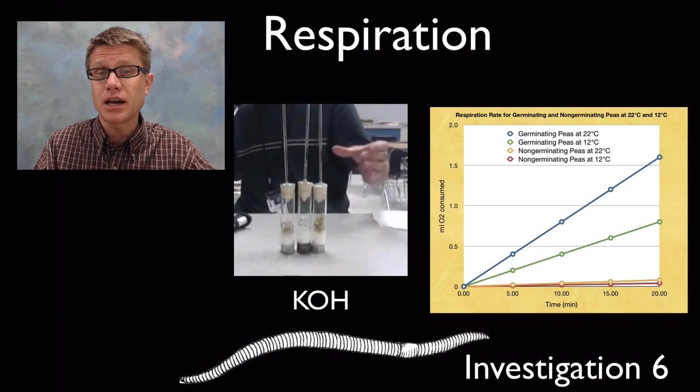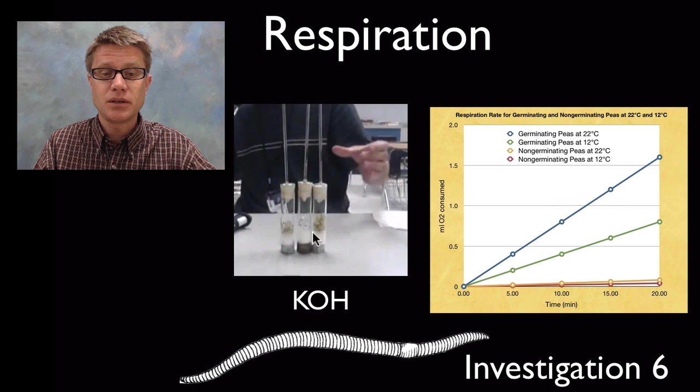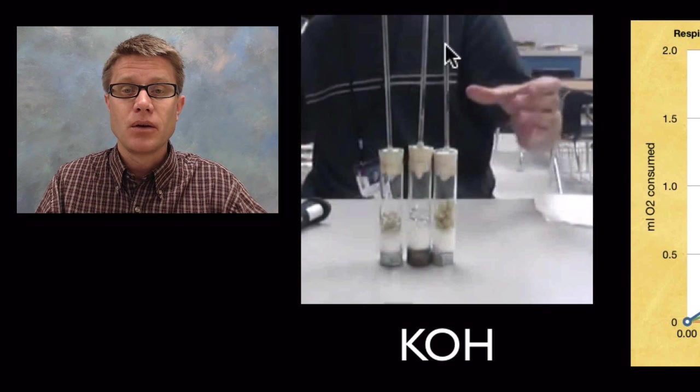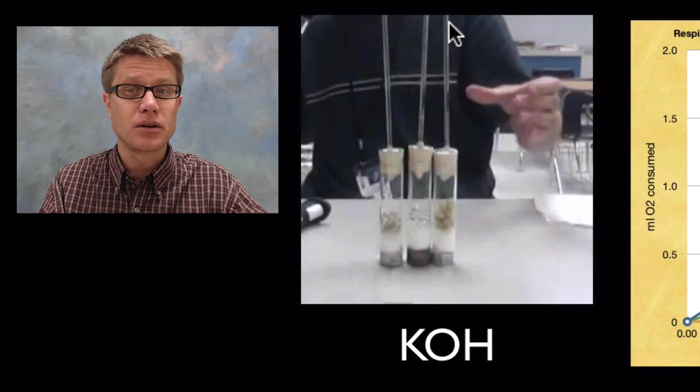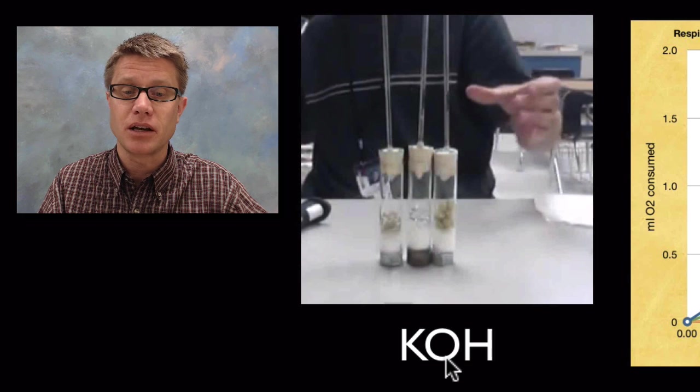Next one is the respiration lab. In the respiration lab, we use a respirometer, which is simply a tube of glass that's sealed up on both ends except on this top end, you have it open. What you'll eventually do is put the whole thing underwater. One other thing I should mention is that we put potassium hydroxide in the bottom.